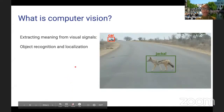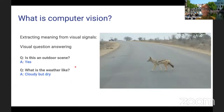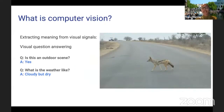This is a very classical problem in computer vision. You might also want to query the image — some form of visual question answering — asking: is this image depicting an outdoor scene? Or what is the weather like? In this case, it could be cloudy but dry.